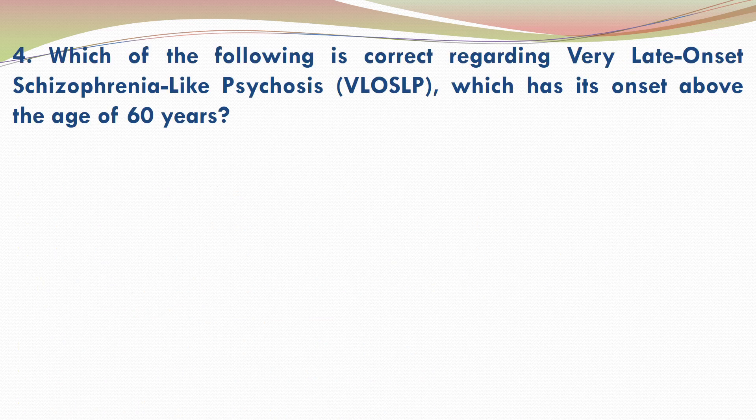Question 4. Which of the following is correct regarding very late onset schizophrenia-like psychosis, which has its onset above the age of 60 years?